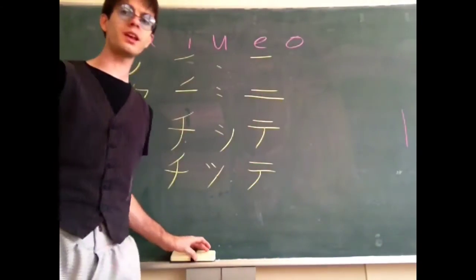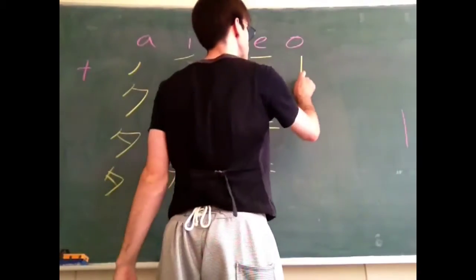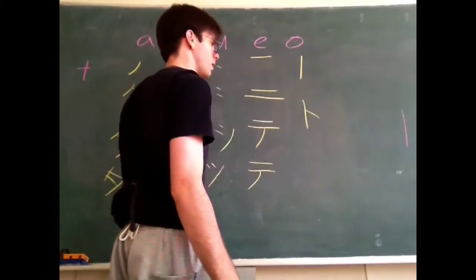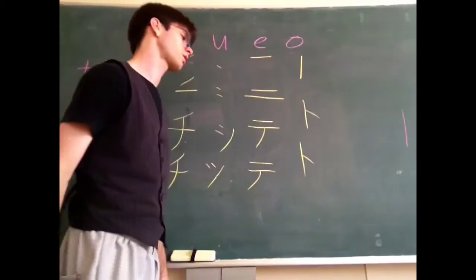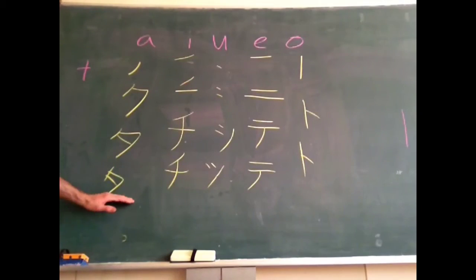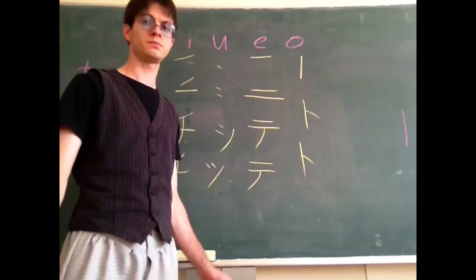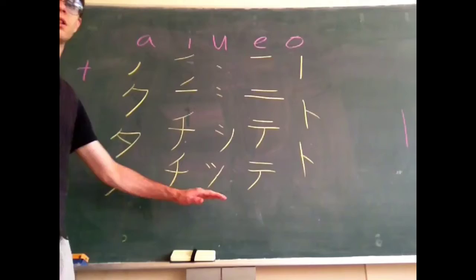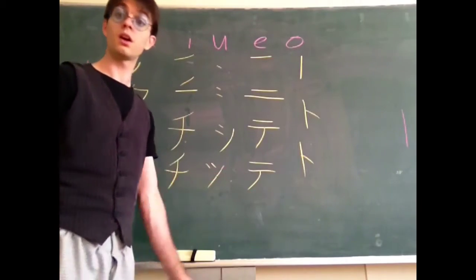And finally, to. To is the easiest one from this one. First is a vertical stroke, second is a vertical stroke with a little tiny thing coming off of it. To. Ta, chi, tsu, te, to. Good stuff.